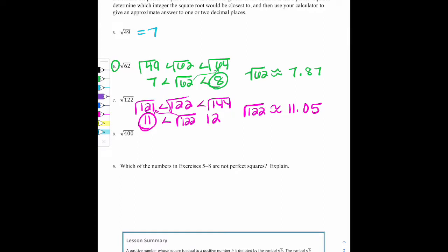And then in number 8, square root of 400, that is a perfect square because 20 times 20 is 400.